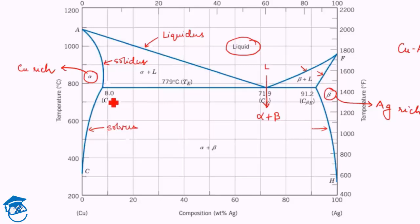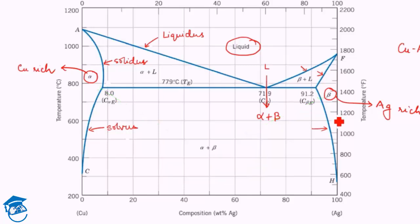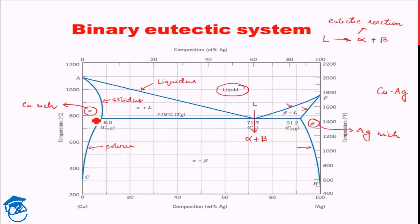These two ends are the terminal ends, so these phases are also known as terminal solid solutions. Although alpha is copper-rich, it is not pure copper — it contains silver along with copper. Similarly, beta has copper as a solute in a silver matrix.